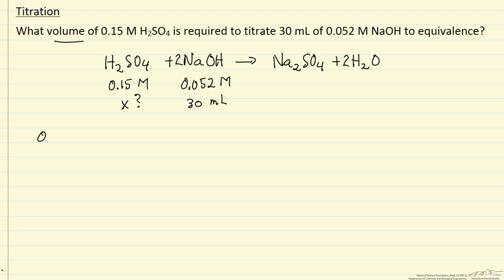If I have 0.052, this is moles of sodium hydroxide per liter, that's what we mean by molar. And now I have 30 milliliters, and so to be consistent here, I'm going to cancel units. This is now, when I multiply this out, this is the number of moles of sodium hydroxide.